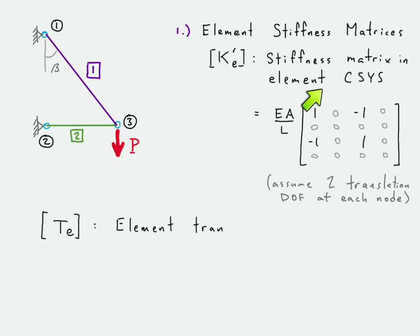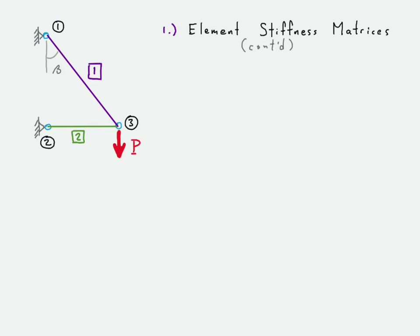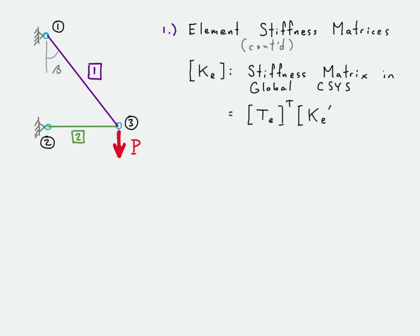That's the elemental coordinate system stiffness matrix. We also need the element transformation matrix, which relates the global coordinate system to the elemental coordinate system using the element angle theta. When assembling the global stiffness matrix, all stiffness matrices must be in the global coordinate system. We accomplish this by taking the stiffness matrix in the elemental coordinate system and applying the transformation matrix on either side to produce the global coordinate system stiffness matrix.